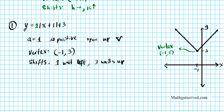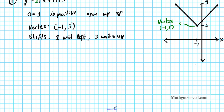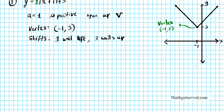Now let's take a look at question number two. For question two, we have the absolute value function given by y equals negative of the absolute value of x minus two, minus one.